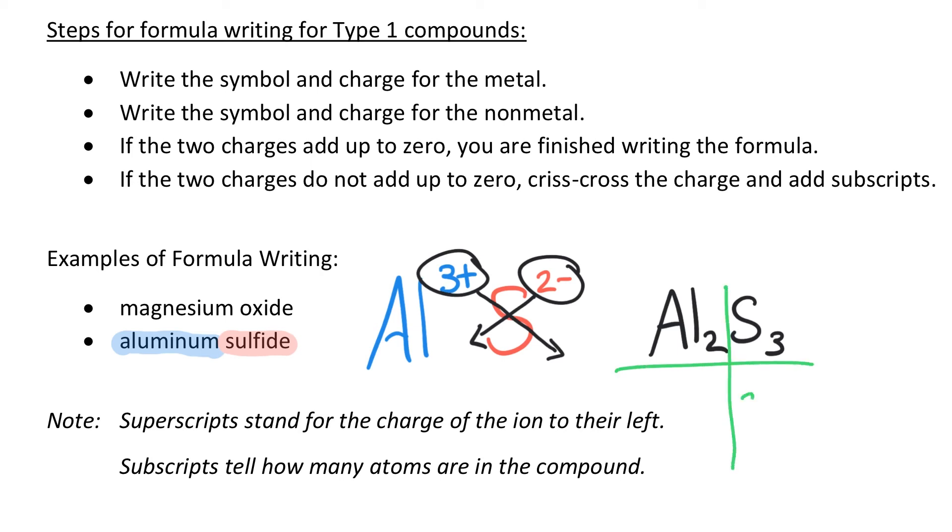Right now I have three sulfurs and the charge on each sulfur is 2-. That would give me an overall -6 charge. For aluminum I have two aluminums. The charge on each aluminum is 3+. This would give me a +6 charge. So we know that Al2S3 is going to be our final formula.